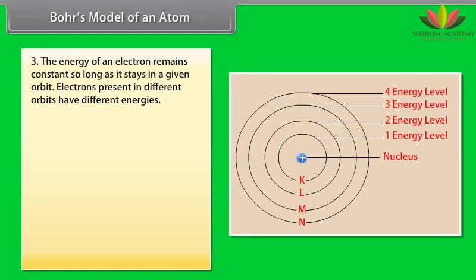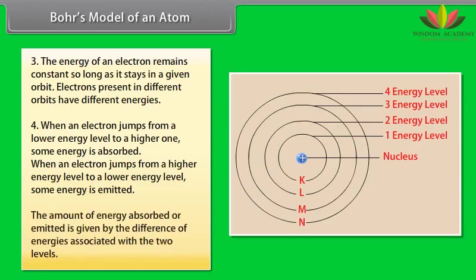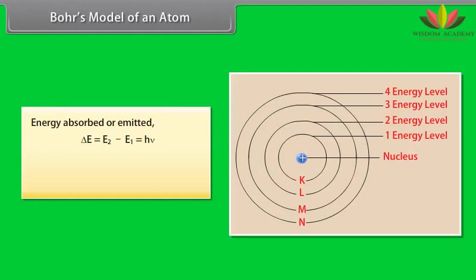When an electron jumps from a lower energy level to a higher one, some energy is absorbed. When an electron jumps from a higher energy level to a lower energy level, some energy is emitted. The amount of energy absorbed or emitted is given by the difference of energies associated with the two levels. Energy absorbed or emitted: Delta E is equal to E2 minus E1, which equals H nu, where H is Planck's constant, and nu is the frequency of radiation absorbed or emitted.